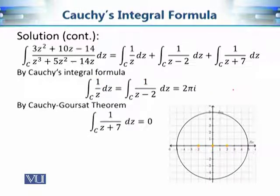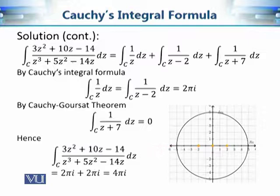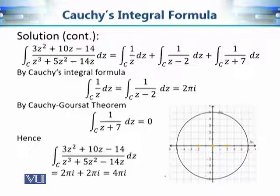Now let's evaluate the contour integral of 1/(z plus 7). The function 1/(z plus 7) is analytic on and inside the circle of radius 5, because minus 7 lies outside this circle on the real axis. According to the Cauchy-Goursat theorem, this contour integral is equal to 0. Hence, our required contour integral becomes 2πi plus 2πi equals 4πi. That is how we use Cauchy's integral formula — and evaluating this any other way would be a complicated task.